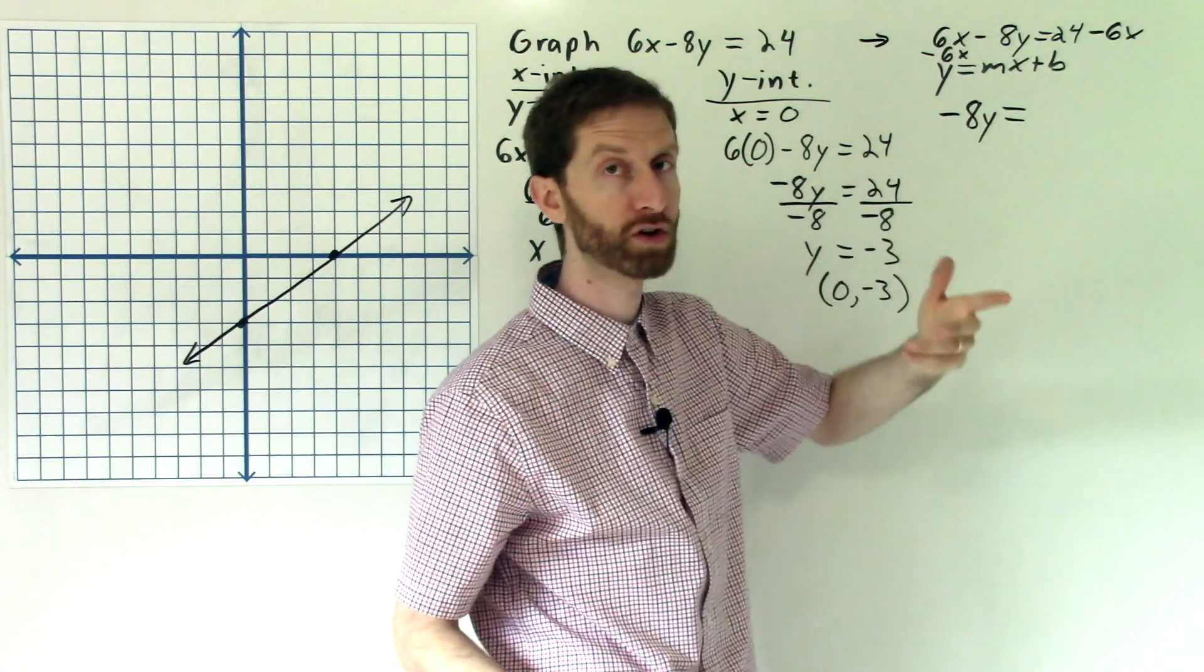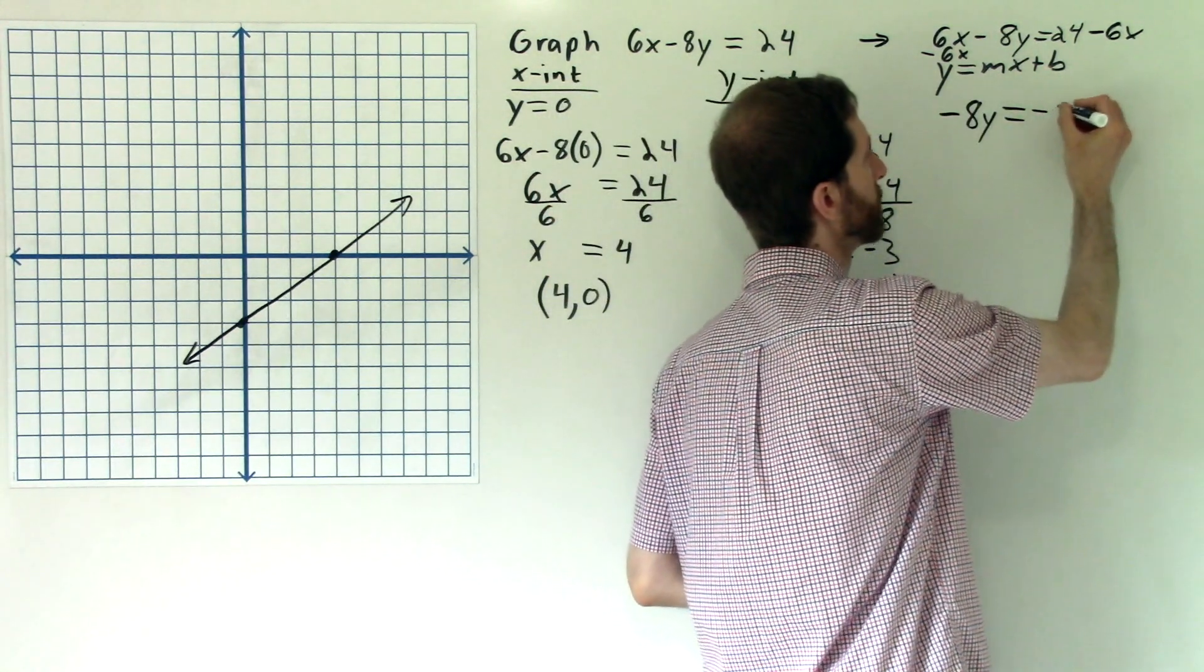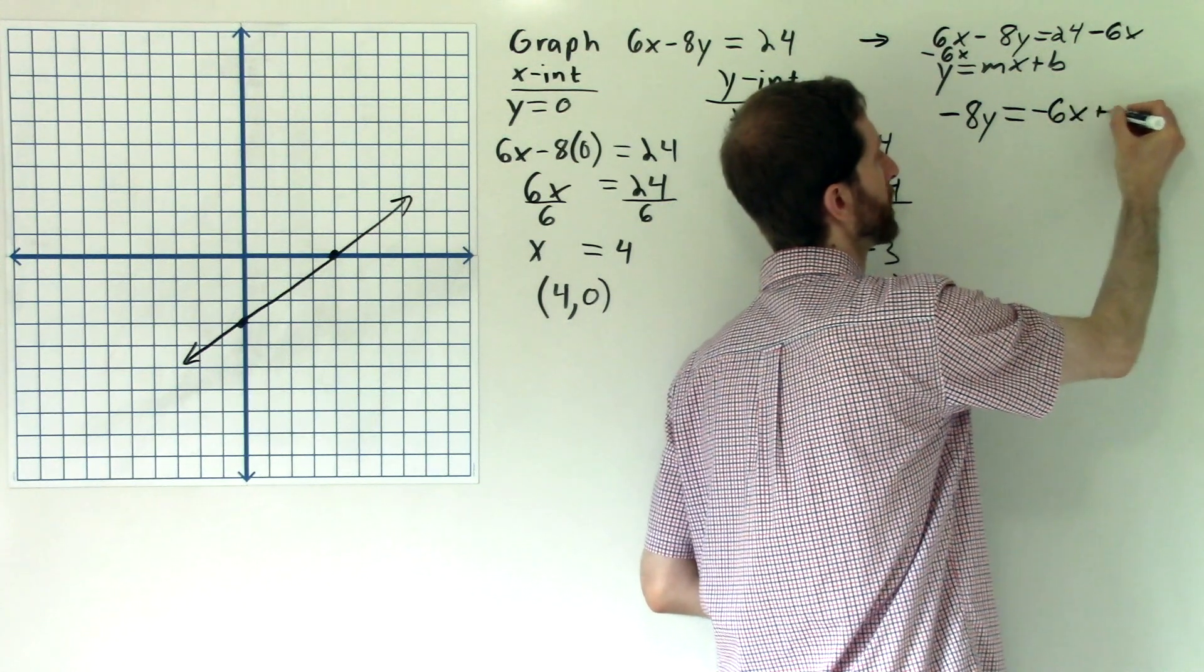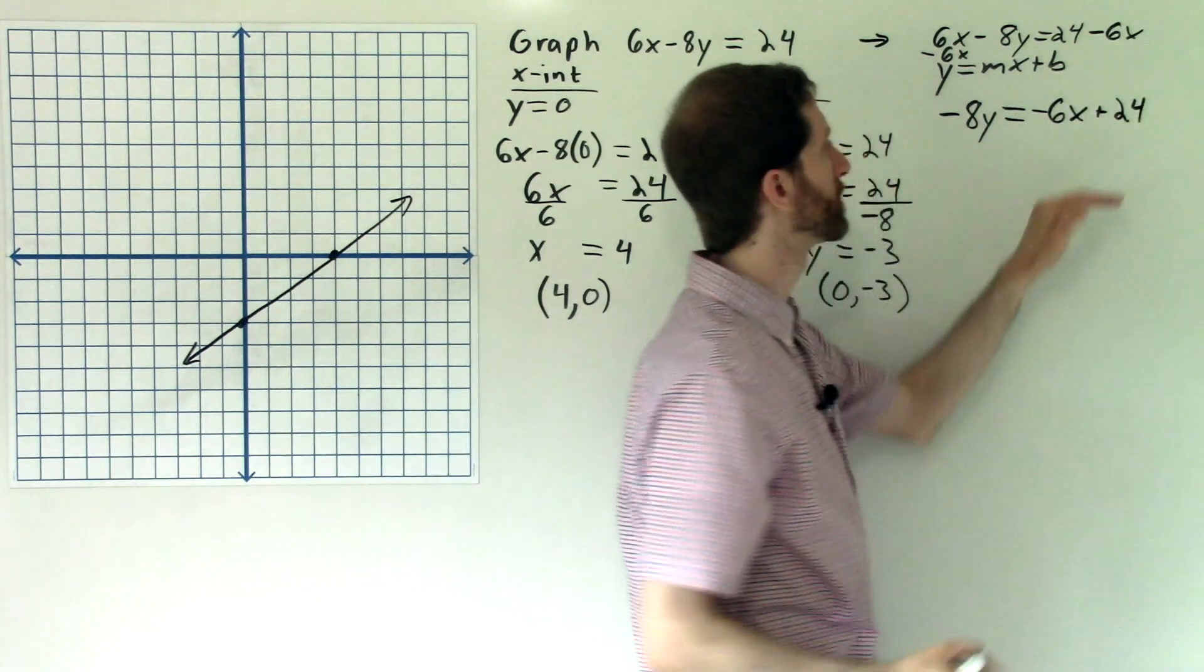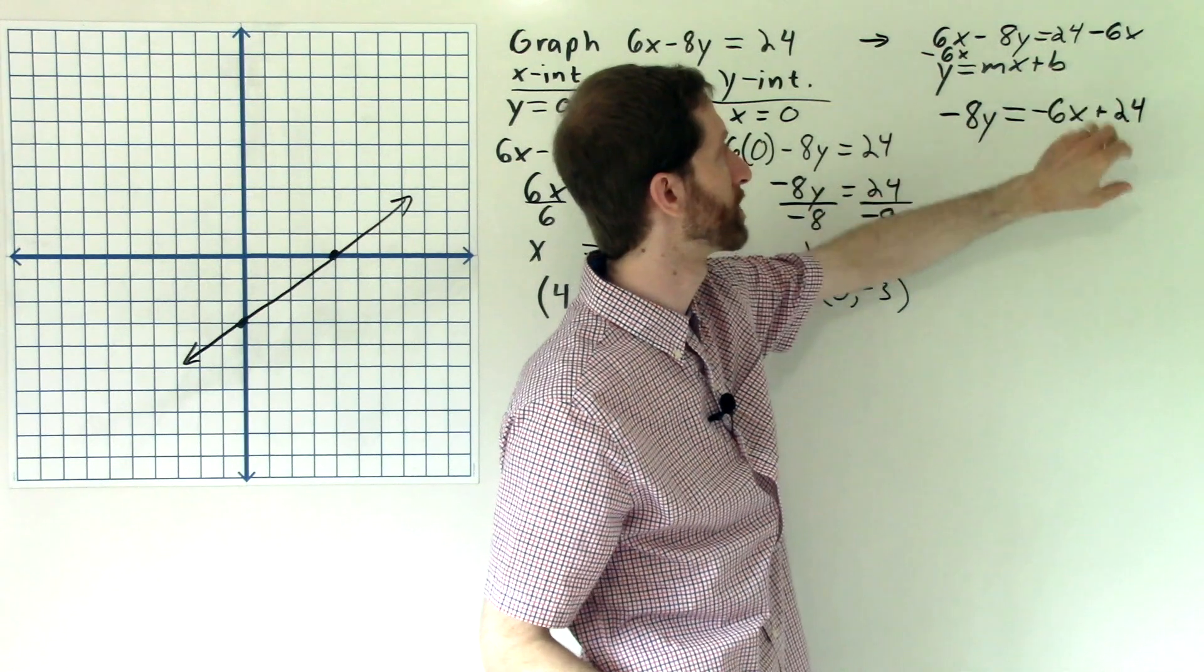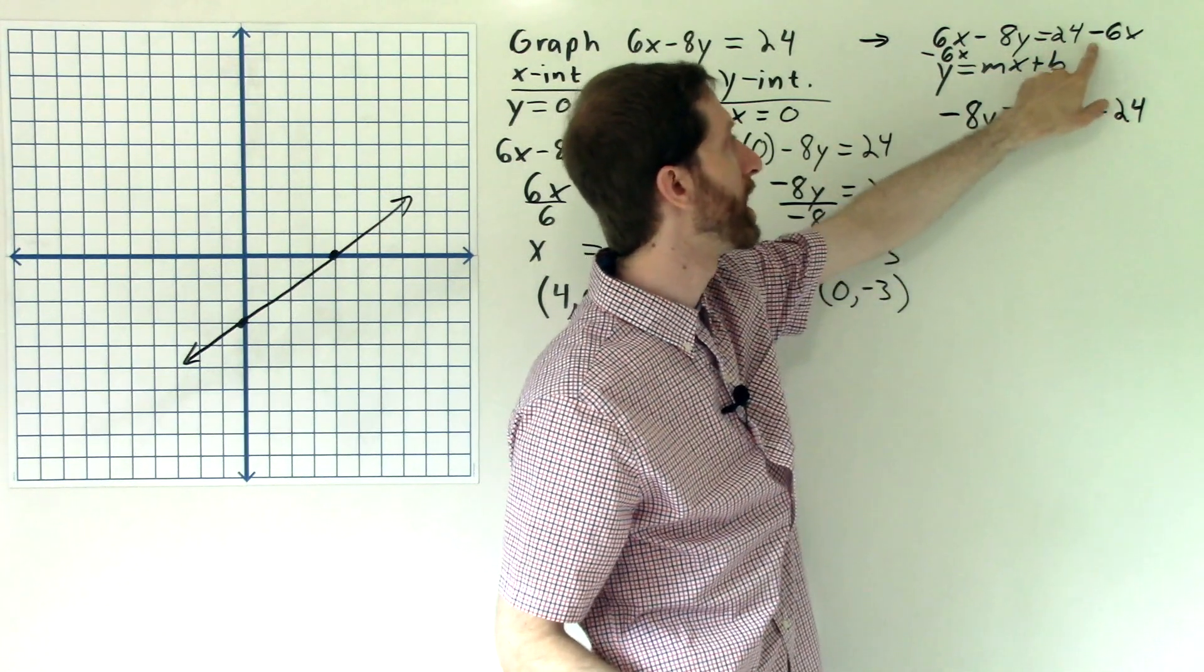Now I notice that I have basically plus a negative 6x. And because I like mx to come first, I'm going to write that as negative 6x first plus 24, which take a moment and just notice that this is the same thing as this. We're just switching the order, keeping the negative sign with the 6.